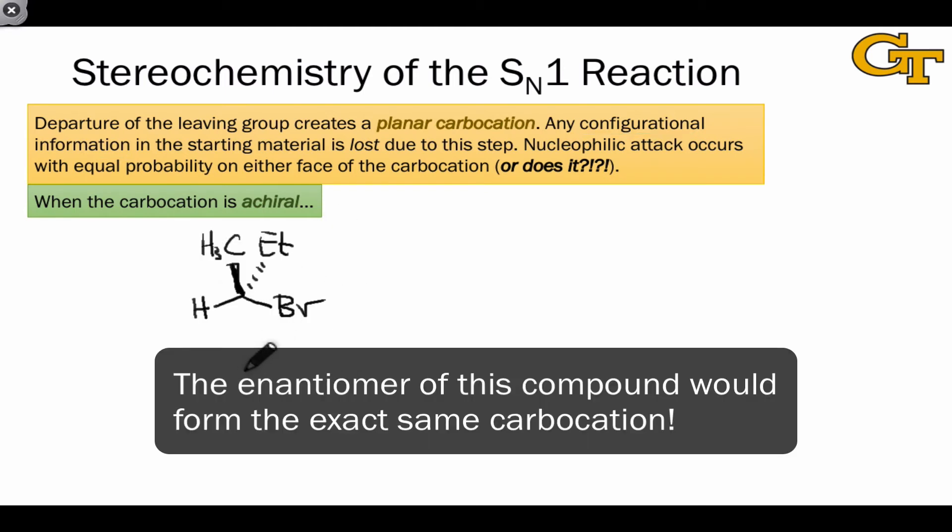Take this hypothetical substrate, for example. After bromine departs with a pair of electrons, the resulting carbocation is trigonal planar, and the incoming nucleophile really has no idea which side of the molecule the bromine was on originally.